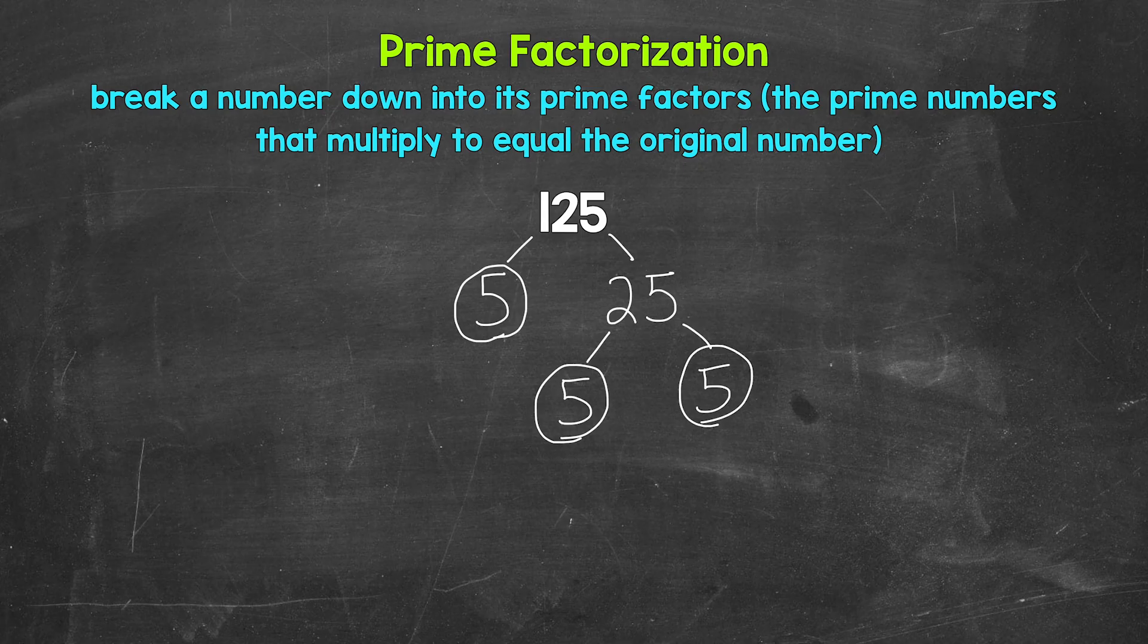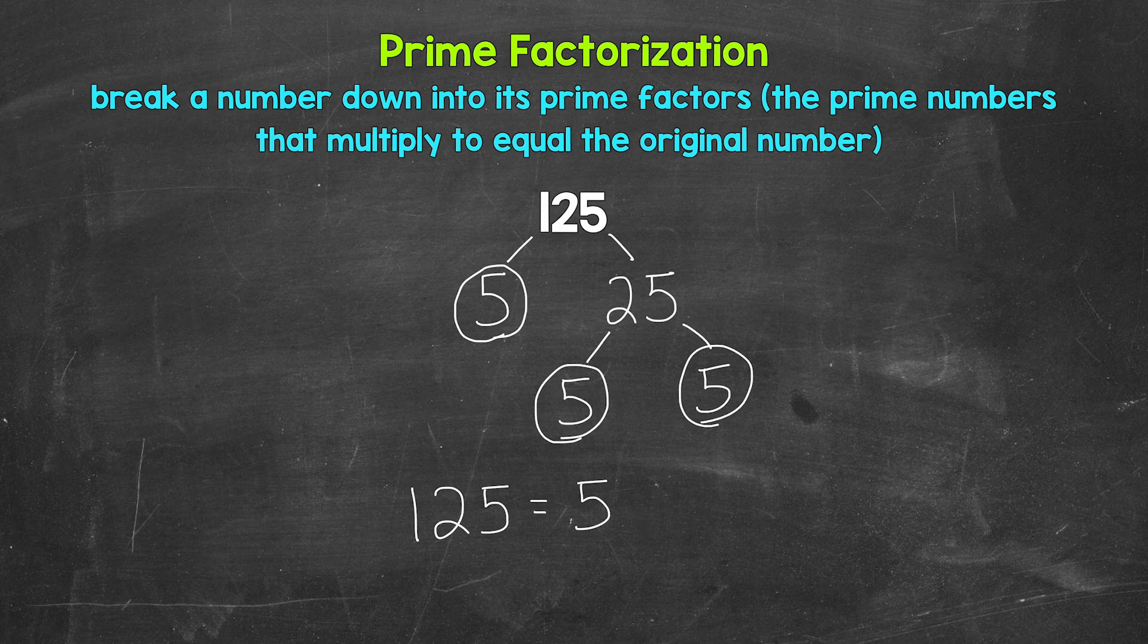And that's the prime factorization of 125. We don't have anything else that we can break down any further. We have all prime numbers. So let's write this out as 125 equals, and then we write out our prime factors and we are multiplying them. So we have 5 times 5 times 5.